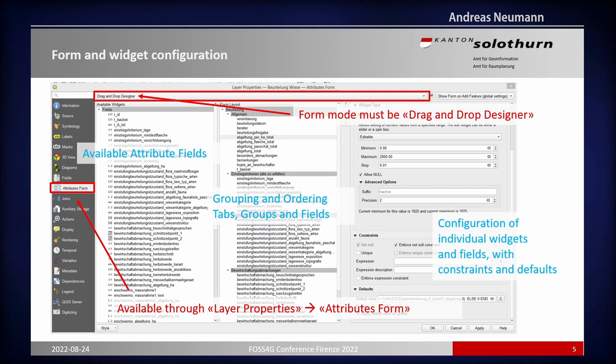You may know the layer properties — I apologize to the many QGIS experts here who already know this, but I hope there will be something new as well. This is a screenshot of the layer properties, the attribute form section. At the top there's a combo box with options: auto-generate form, drag and drop designer, or a third option to create the form in Qt Designer and attach it — though that's quite complicated and requires almost programming skills. For our purpose, the drag and drop designer is the best tool.